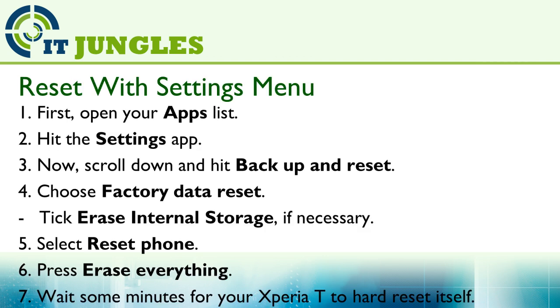Now you can reset the device using the settings menu. First open up your apps list, then go into Settings. Scroll down and hit Backup and Reset, then choose Factory Data Reset.